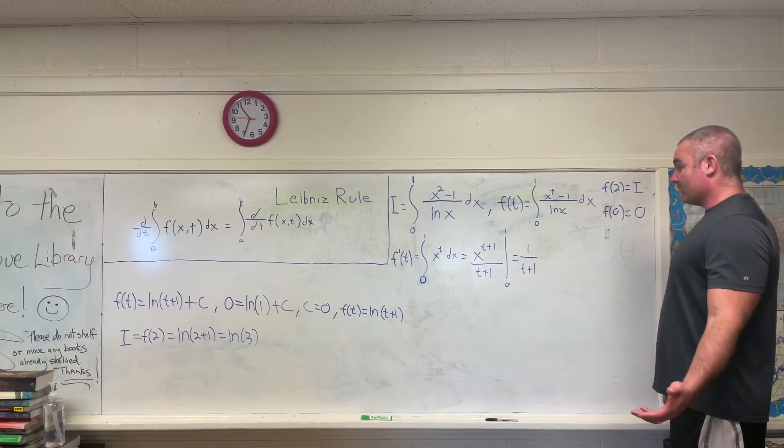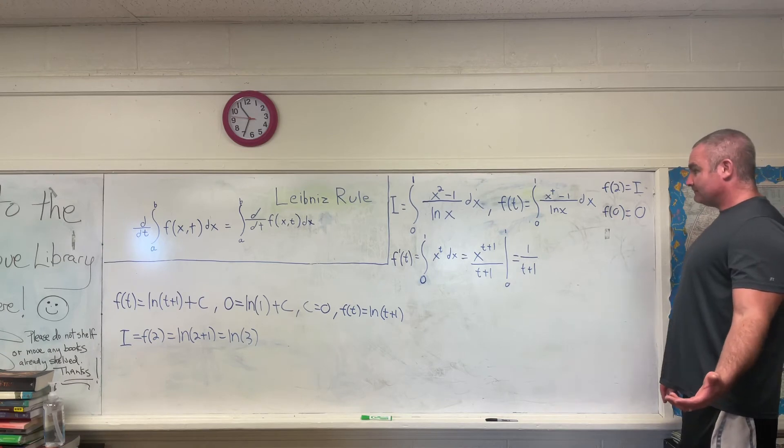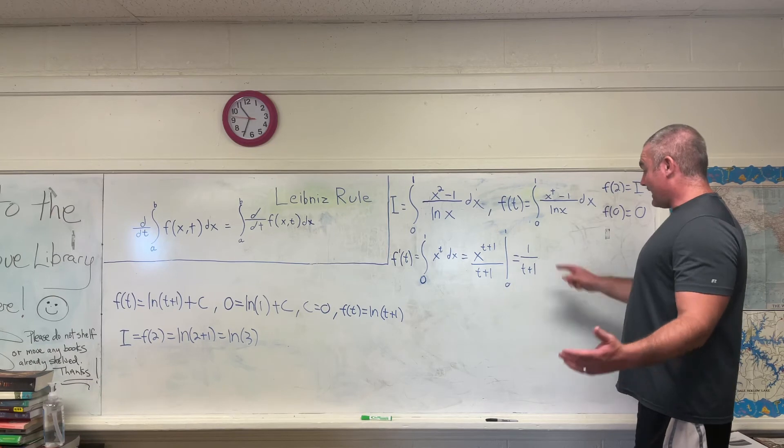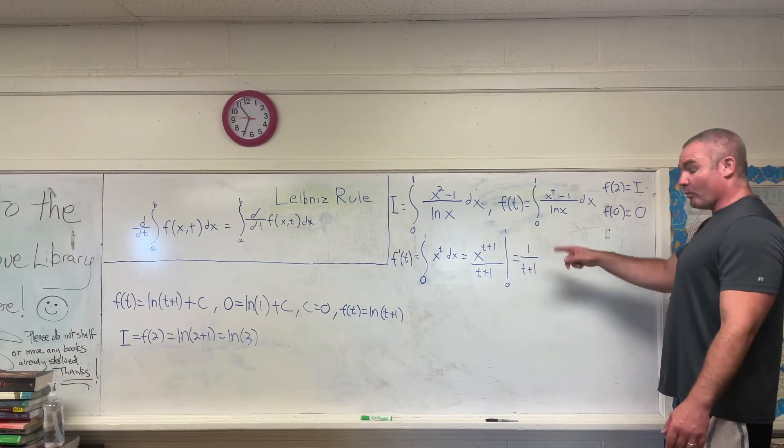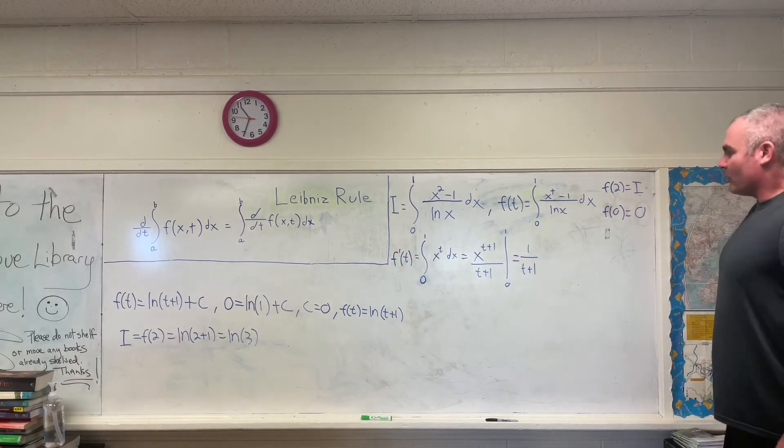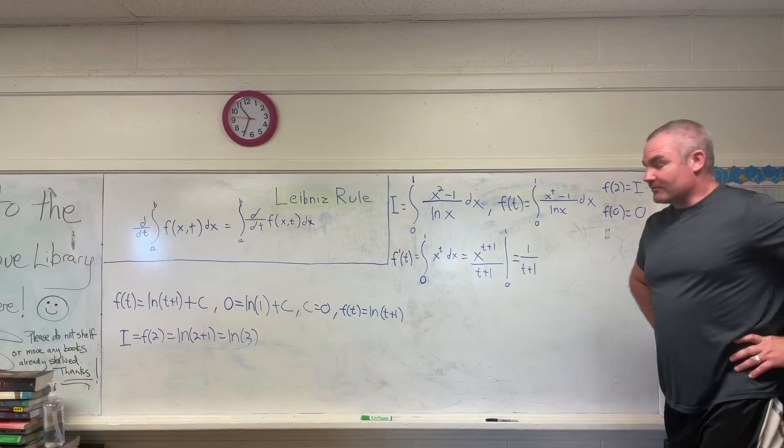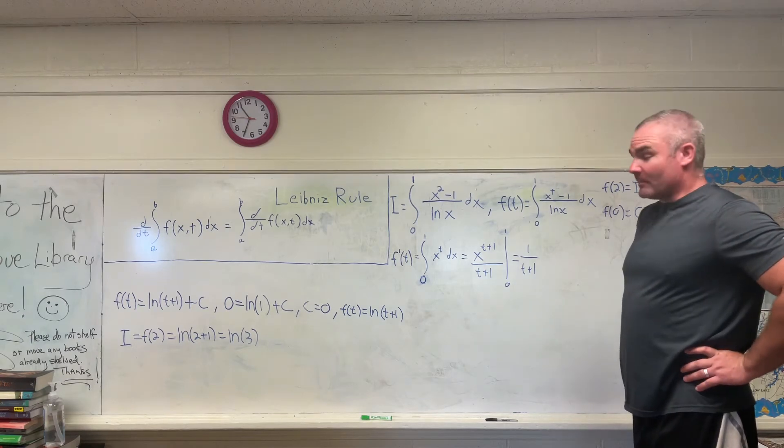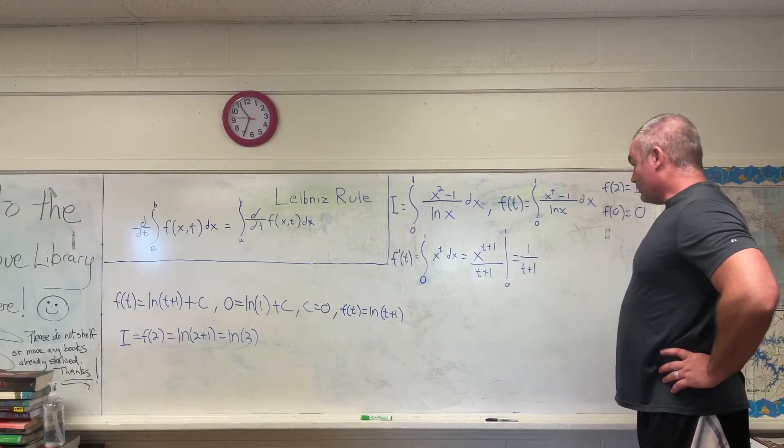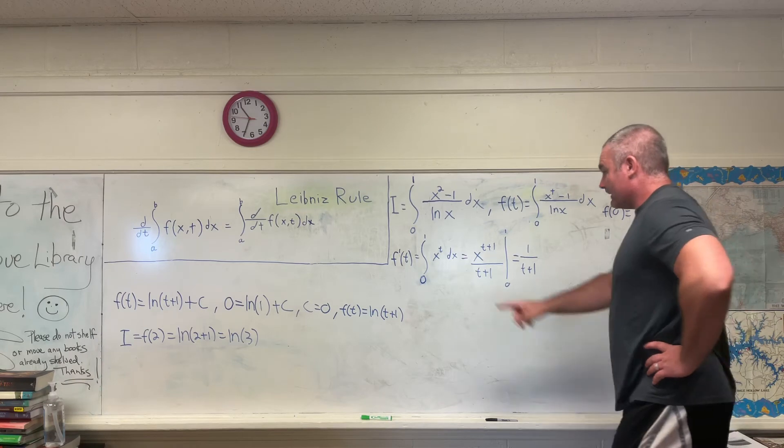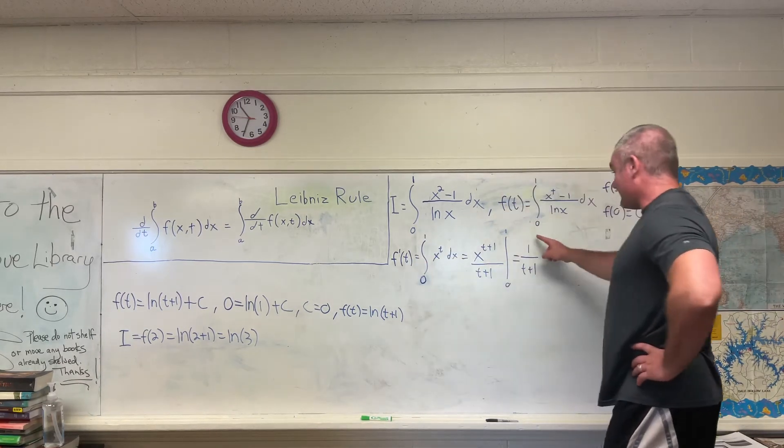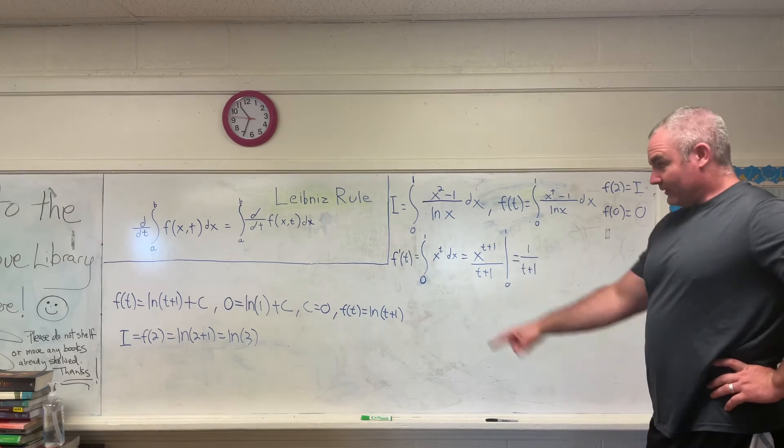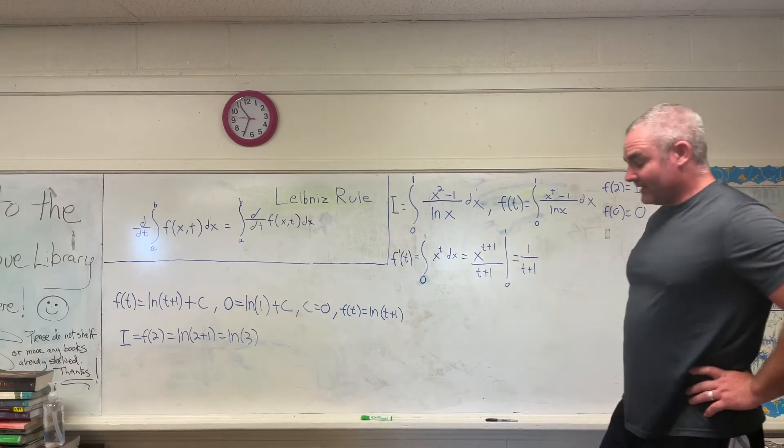So now we know what f prime of t is as just a normal everyday function. It's 1 over t plus 1. But we're not interested in f prime of t, we're interested in f of t. So well, how do you get to f of t from f prime? You integrate it. So integrating f prime of t is the same as integrating 1 over t plus 1. You guys all know that that's going to give you the natural log of t plus 1.